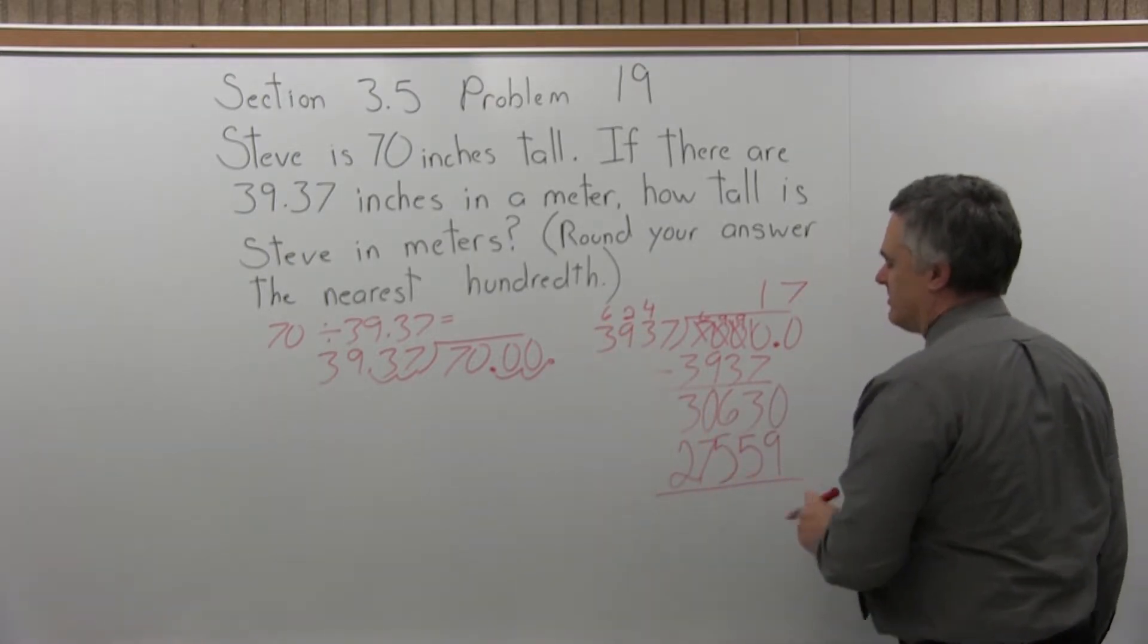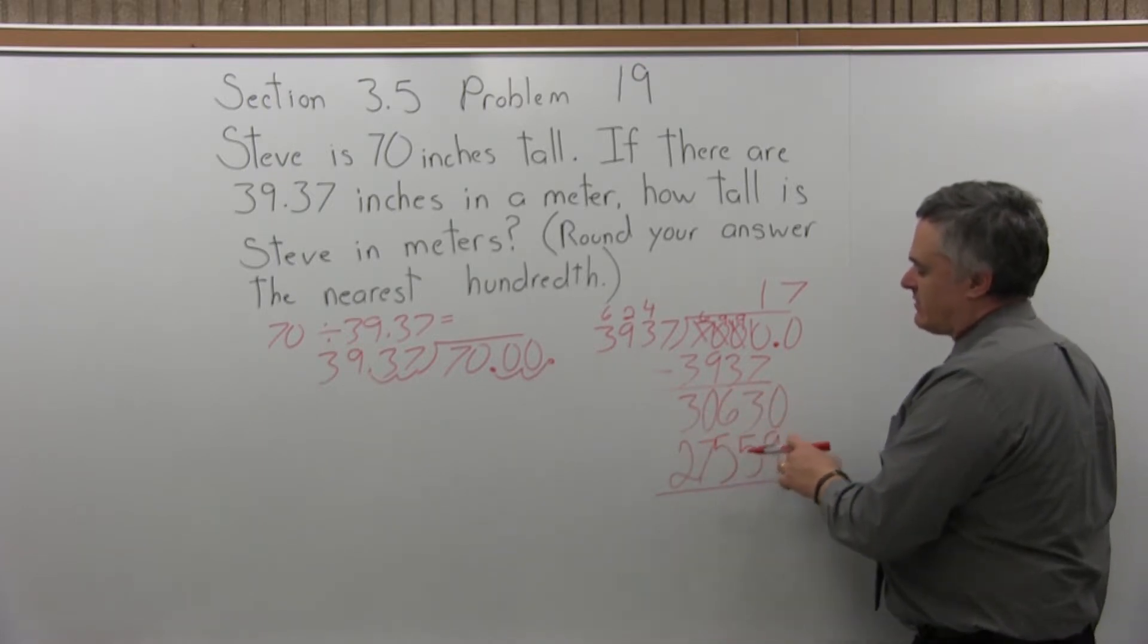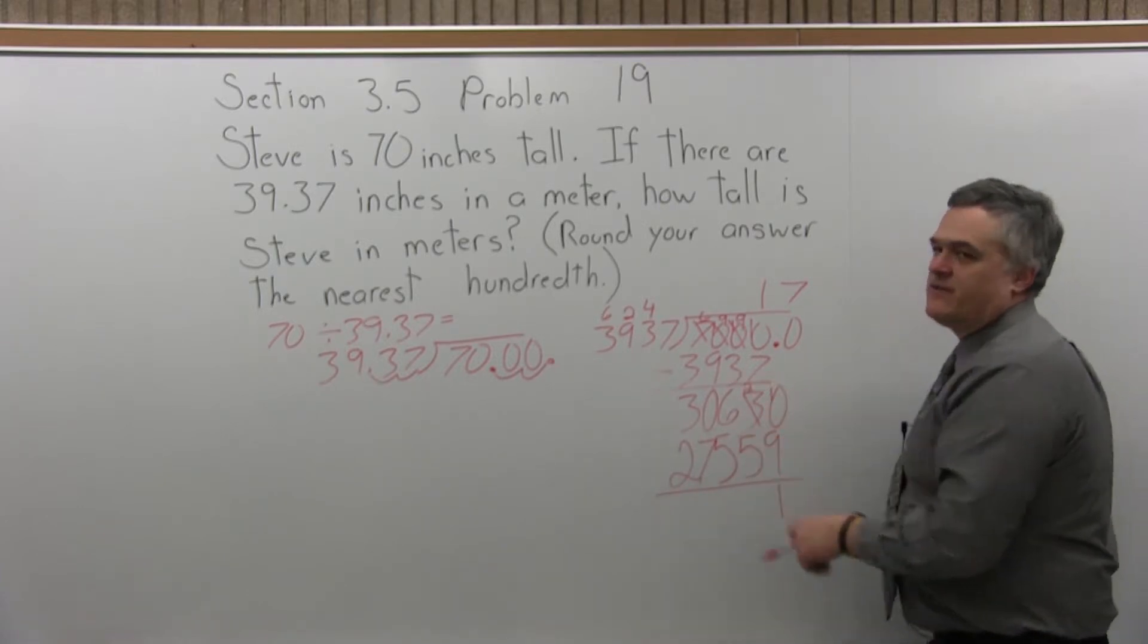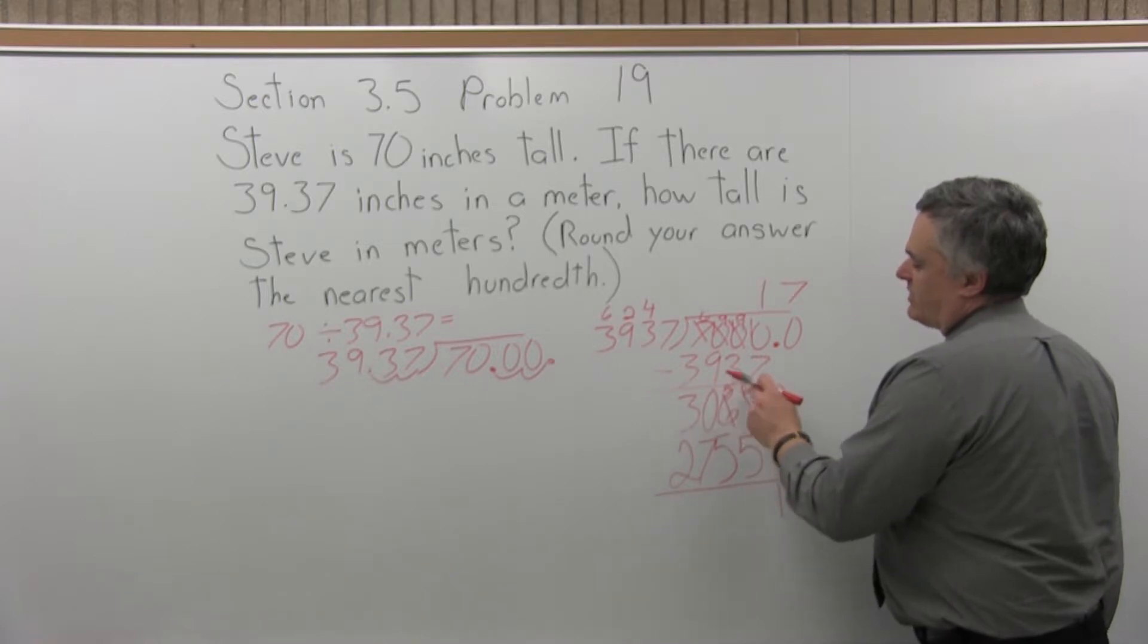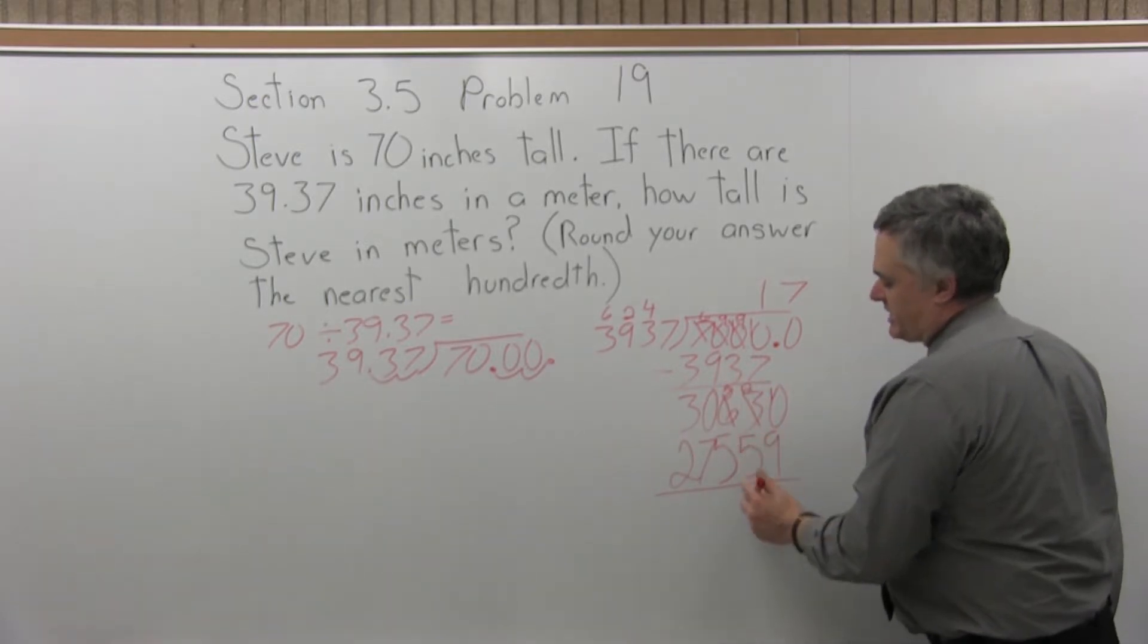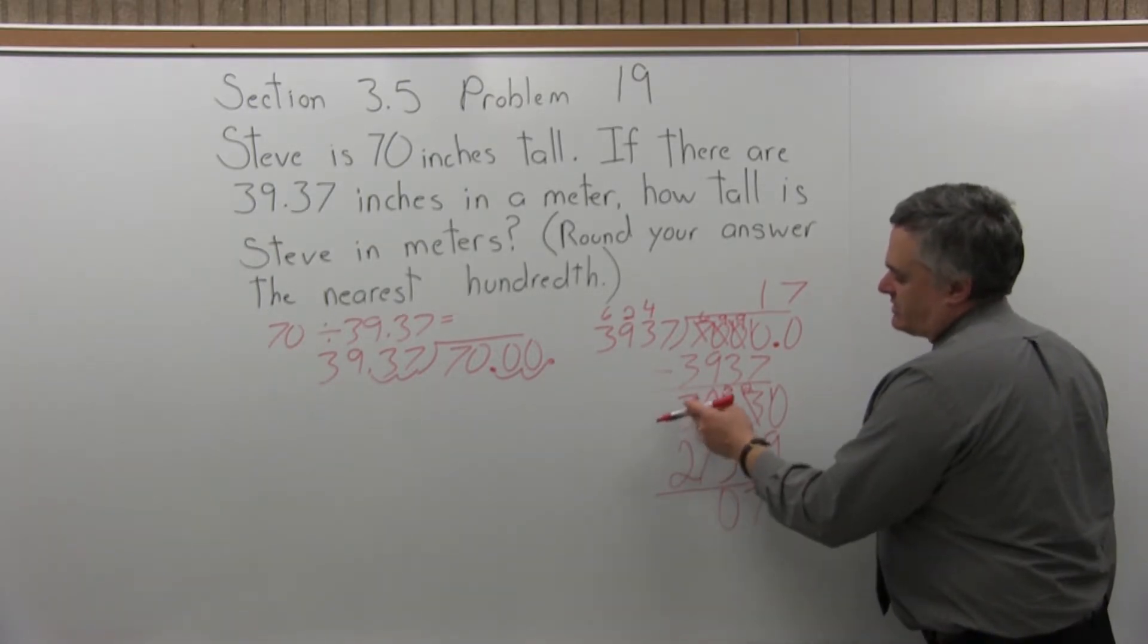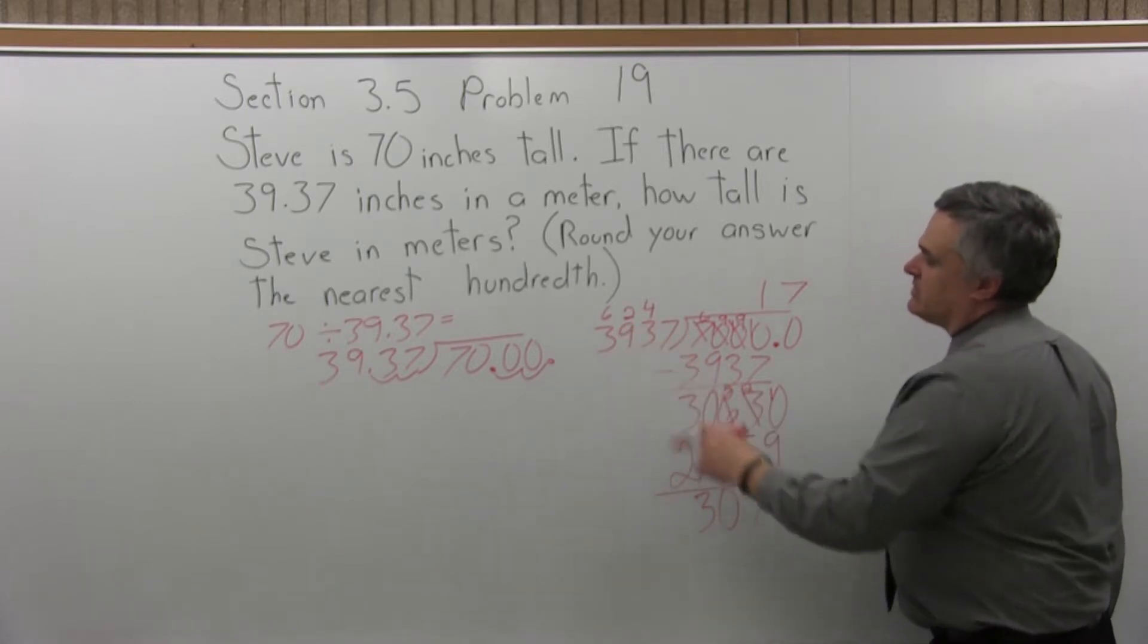So it fits pretty good. So now I have to subtract 30,630 minus 27,559. Again I'm going to have to borrow. The 0 minus 9 won't work, so borrow from the 3, make it a 2, and then I can write the 0 as a 10. 10 minus 9 is 1. 2 minus 5, that won't work, either the 5 is too big to subtract from the 2. Go over to the next spot, borrow that 6, make it a 5, and then you can write the 2 as a 12. 12 minus 5 is 7. Then 5 minus 5 is 0. Then I can really think of this as 30 minus 27 is 3. So I have 3071. So it works.